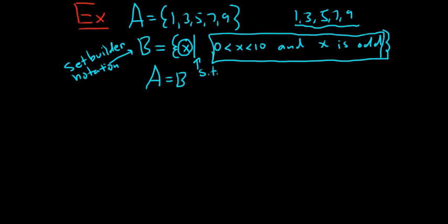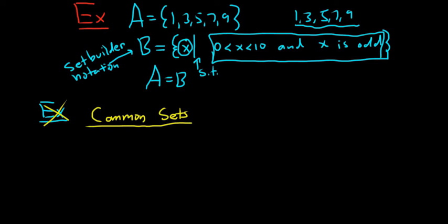Let's talk about some common sets. One common set is the set of natural numbers, written with a fancy N. This is the set containing all of the positive integers — whole numbers that are positive: 1, 2, 3, 4, 5, 6, 7, and so on. The three dots indicate it goes on forever. Some people allow 0 to be a natural number, but most don't — we'll stick with 1 being the smallest natural number.